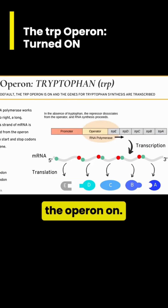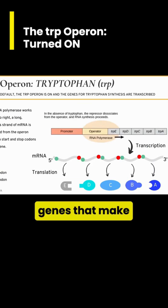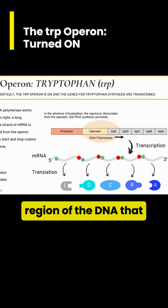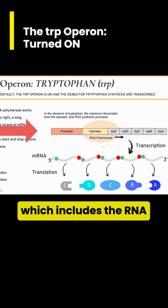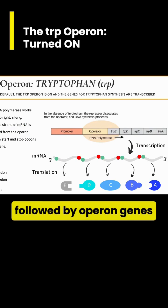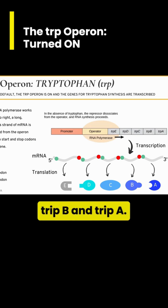Let's continue with the trp operon. We want to express the genes that make tryptophan. The trp operon is a region of the DNA that includes, from left to right, the promoter — which includes the RNA polymerase binding site and the operator — followed by operon genes trpE, trpD, trpC, trpB, and trpA.